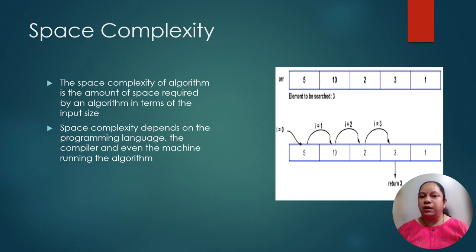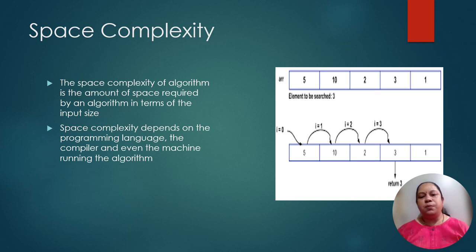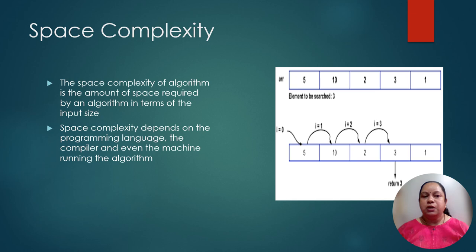In C programming language, one integer takes 2 bytes. We have stored 5 integers, so 5 integers will take 10 bytes. But in Java programming language, one integer takes 4 bytes, so the storage required would be 5 into 4, which is 20 bytes. So for C it is 10 bytes, and for Java it is 20 bytes. The space complexity of an algorithm is the amount of space required by an algorithm in terms of the input size. Here the input size is 5. Space complexity depends on the programming language, the compiler, and even the machine running the algorithm.